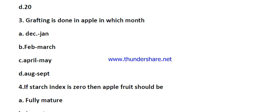Question number three: grafting is done in apple in which month? The options are December, January, February, March, April, May, or September. The right answer is February and March. Budding is generally done in June and July, but grafting is done in February and March.